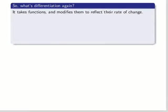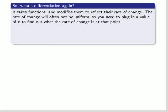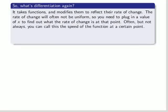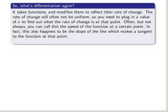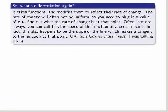So what's differentiation again? It takes functions and modifies them to reflect their rate of change. The rate of change will often not be uniform, so you need to plug in a value of x to find out what the rate of change is at that point. Often, but not always, you can call this the speed of the function at a certain point. In fact, this also happens to be the slope of the line which makes a tangent to the function at that point.